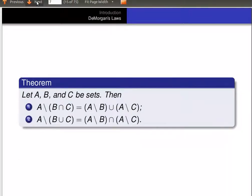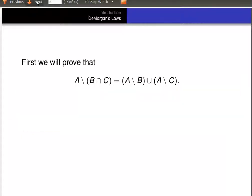So here's De Morgan's Laws — the theorem we want to prove. If A, B, and C are sets, then we want to prove first that A minus (B intersect C) equals (A minus B) union (A minus C). And secondly, A minus (B union C) equals (A minus B) intersected with (A minus C). So first we'll prove that A minus (B intersect C) equals (A minus B) union (A minus C).